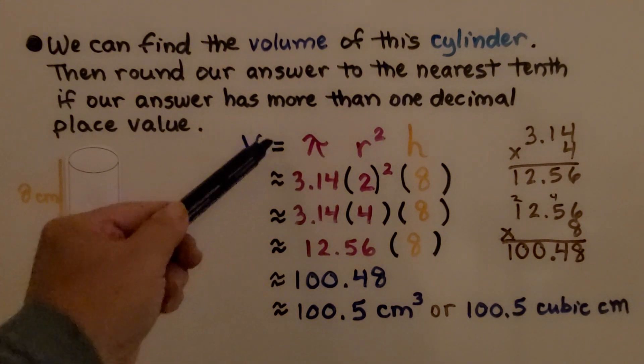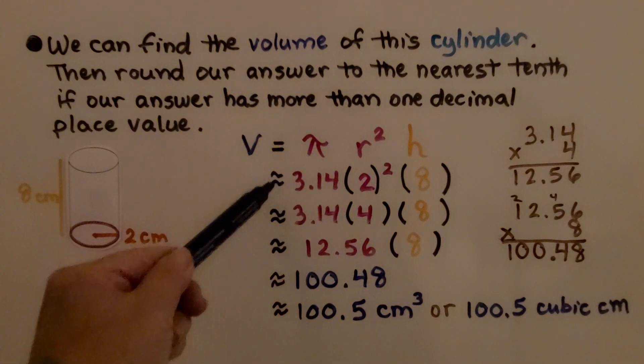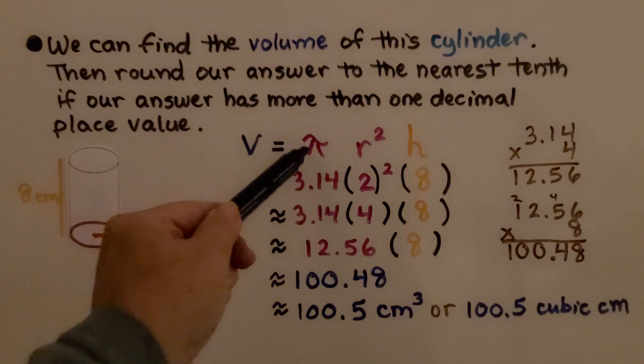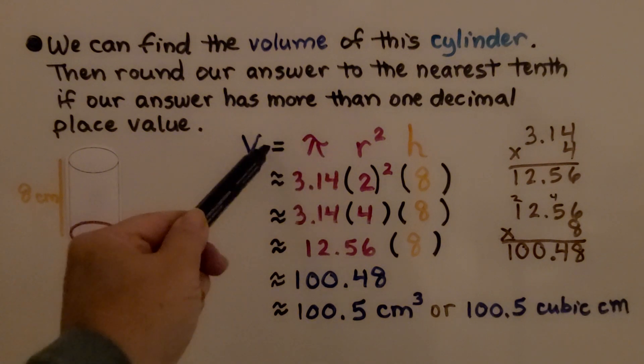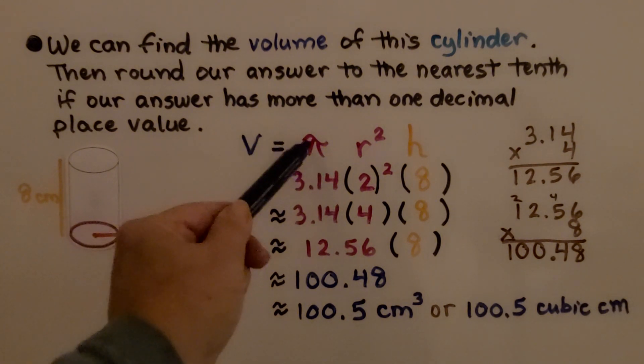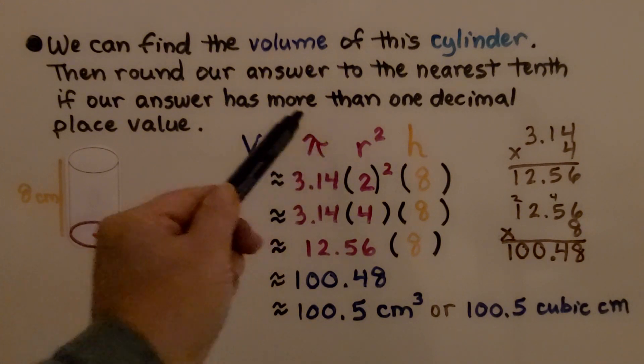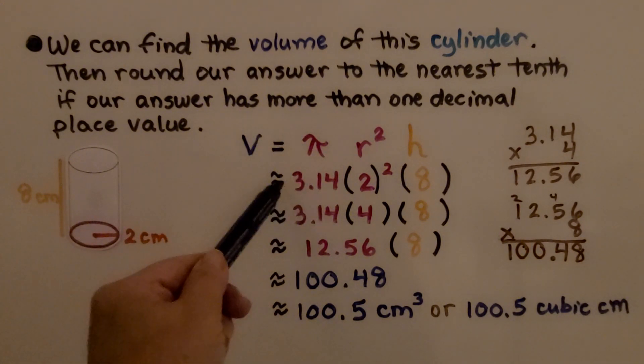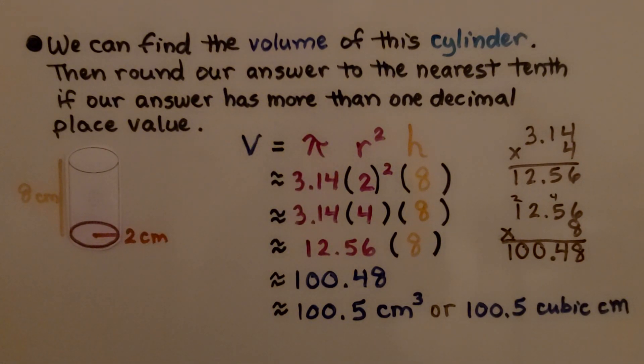Now notice it went from an equal sign to an approximation symbol. When we have the actual symbol pi here, we can use equal because this symbol represents every digit of pi. When we use 3.14 is when we need an approximation symbol.